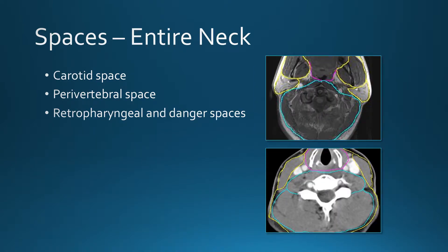Through the entire neck we have the carotid space, which goes through the whole neck. In the upper neck it's called the retrostyloid parapharyngeal space, and in the lower neck it's called the carotid space. The perivertebral space and retropharyngeal and danger spaces also go through the entire neck.